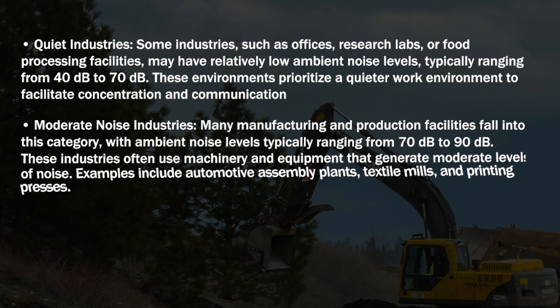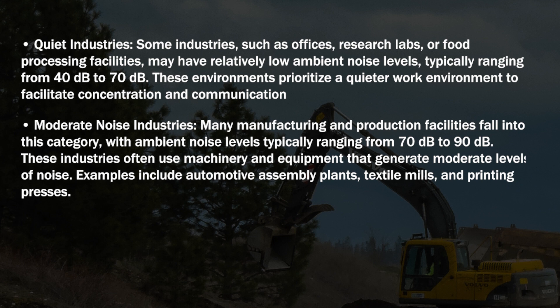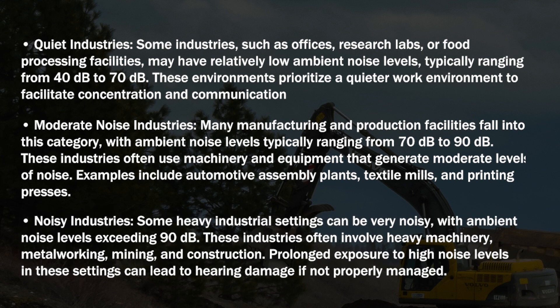Moderate noise industries — many manufacturing and production facilities — typically have ambient noise levels ranging from 70 to 90 dB, using machinery that generates moderate noise. Examples include automotive assembly plants, textile mills, and printing presses. Noisy industries, such as heavy industry settings, can exceed 90 dB, often involving heavy machinery, metalworking, mining, and construction. Prolonged exposure to high noise levels in these settings can lead to hearing damage if not properly managed.